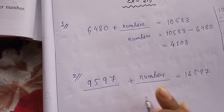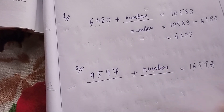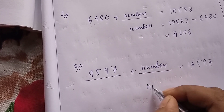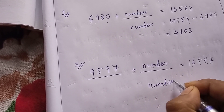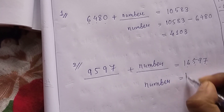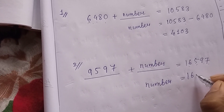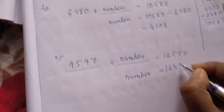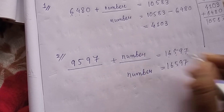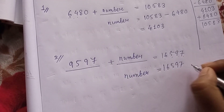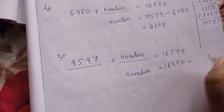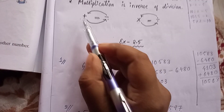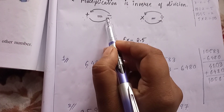To find the unknown number, we use the same rule: bring the known number to the right side. When the plus sign comes to the right side it becomes minus. So we calculate 16,597 minus 9,597.